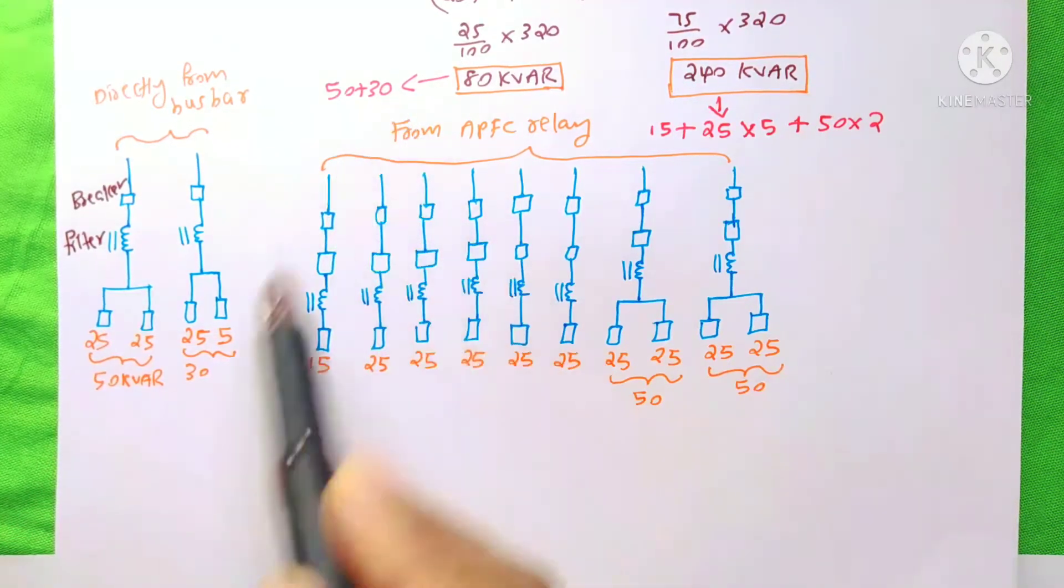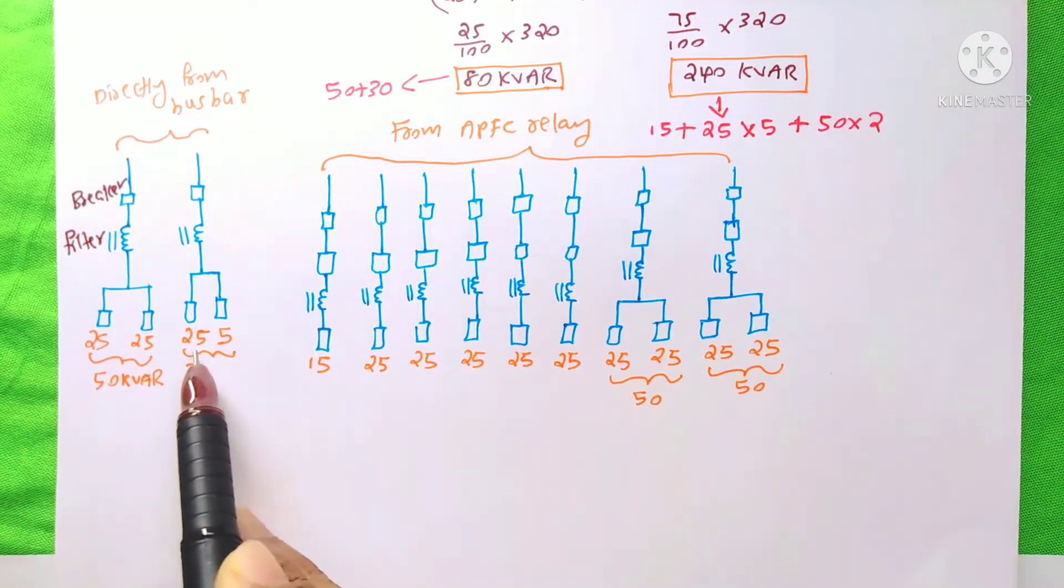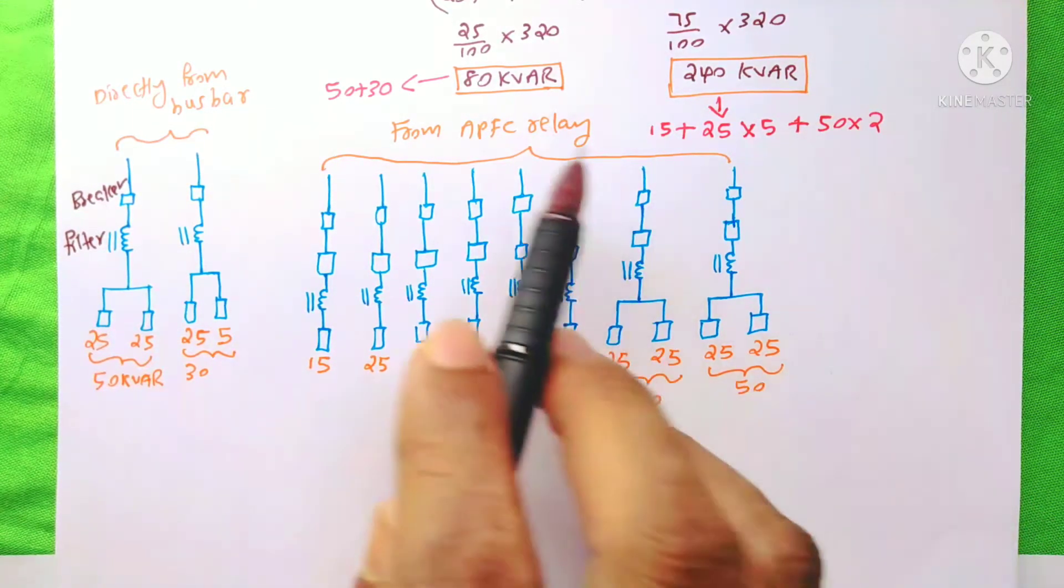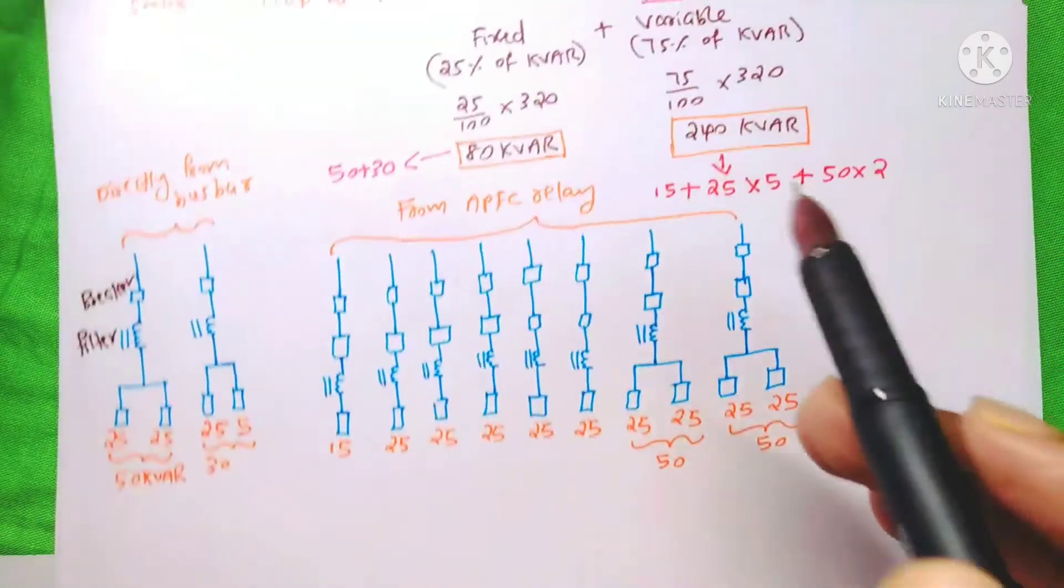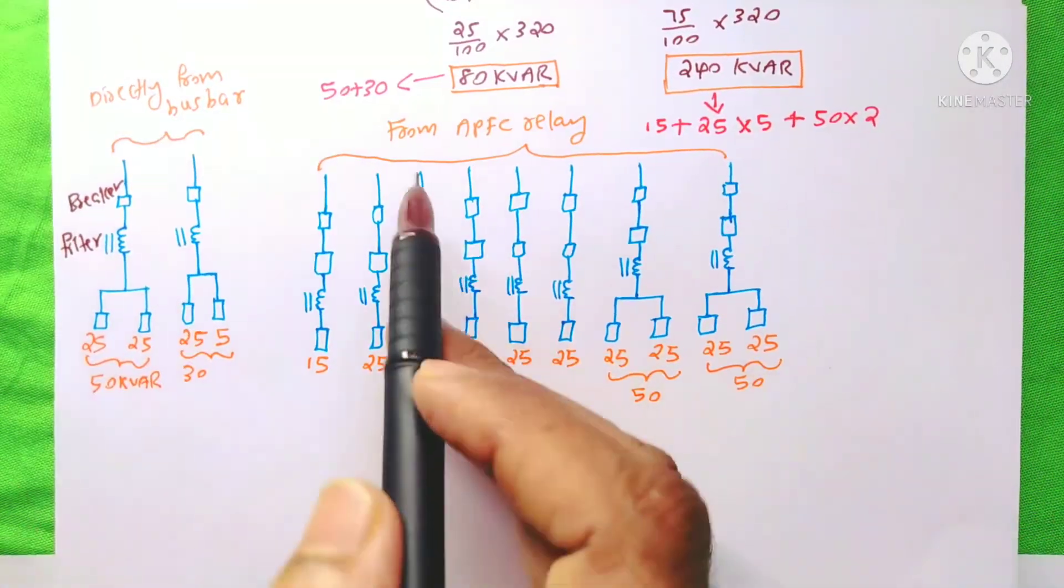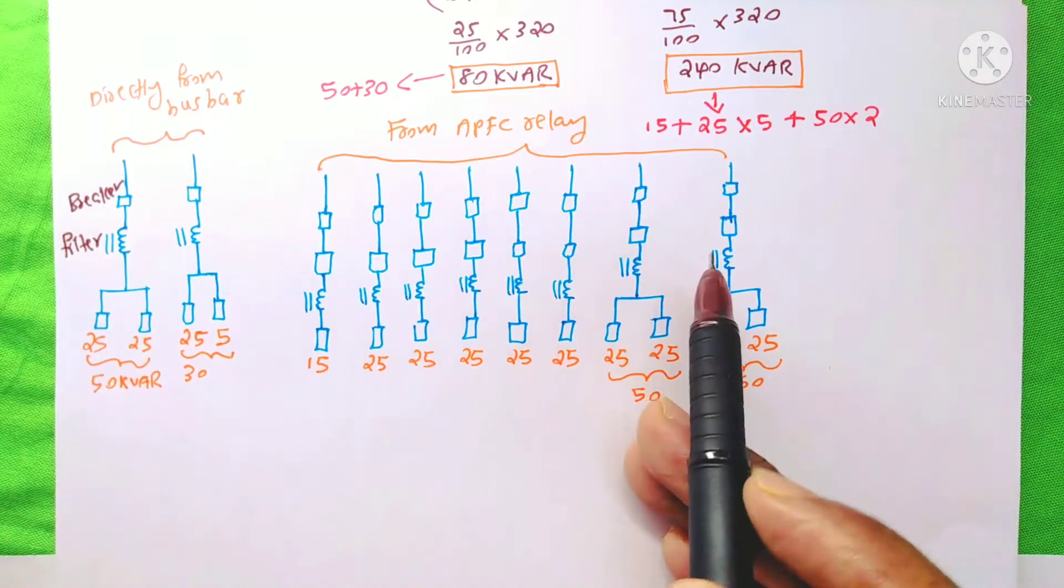And here, the 30 kVAR I divided into 25 plus 5, that is 30 kVAR. And all the remaining variable capacitor bank I have done like this. That is all the power gets from the APFC relay.